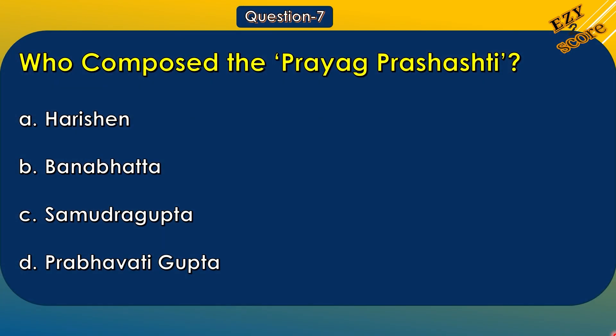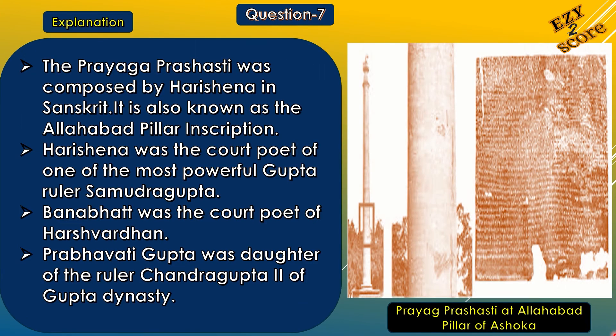Question 7: Who composed the Prayag Prashasti? Options: A. Harishen, B. Banabhat, C. Samudra Gupta, D. Prabhavati Gupta. The correct answer is option A, Harishen. The Prayag Prashasti was composed by Harishen in Sanskrit language. It is also known as the Allahabad Pillar inscription. Harishen was the court poet of the powerful Gupta ruler Samudra Gupta. Banabhat was the court poet of Harshvardhan, while Prabhavati Gupta was the daughter of Chandragupta II of the Gupta dynasty. You can see the Prayag Prashasti on the Allahabad pillar of Ashokan inscription.